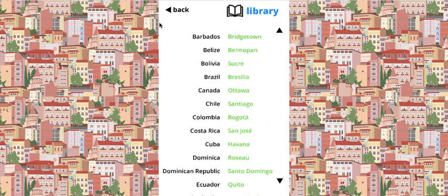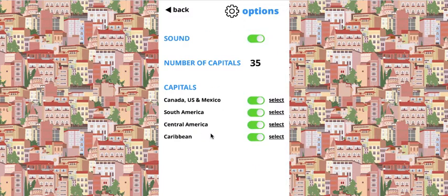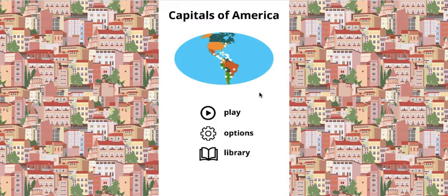I don't need to read that — I know all my capitals. The number of capitals is 35. So: Canada, US, and Mexico; South America; Central America; and the Caribbean. I'll start all of them. Actually, I'm just going to do capitals.